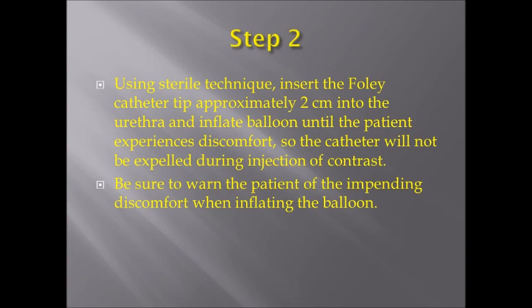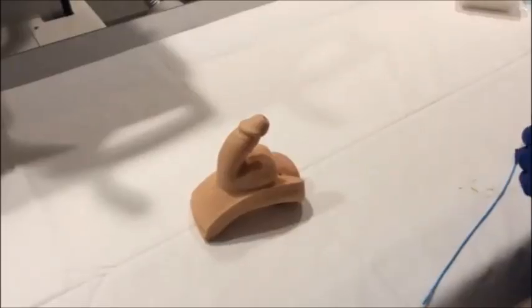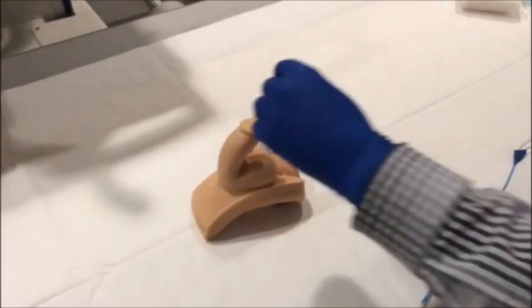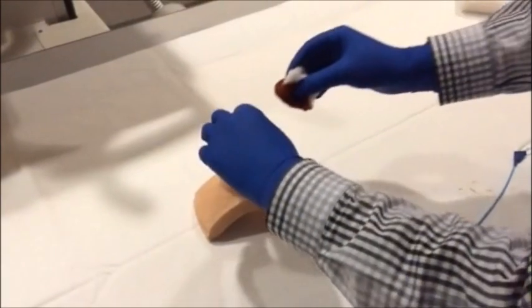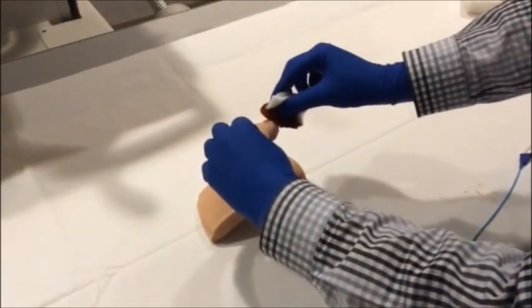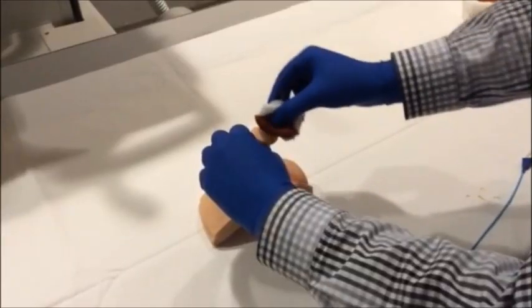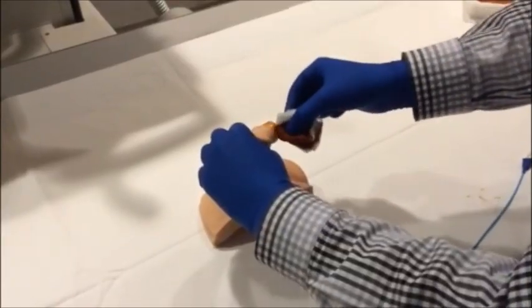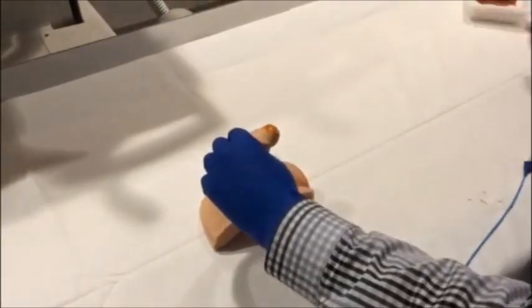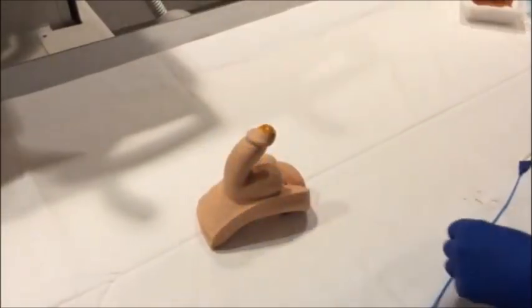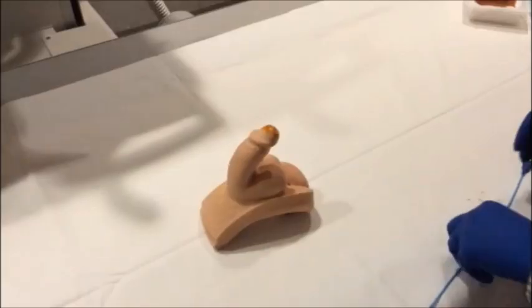Step 2: Using sterile technique, insert the Foley catheter approximately 2 cm into the urethra and inflate the balloon until the patient experiences some discomfort, so that the catheter will not be expelled during injection. Be sure to warn the patient about this step and tell him to let you know when he is experiencing discomfort.